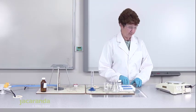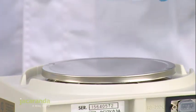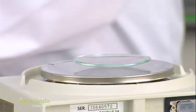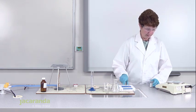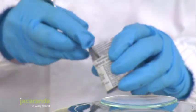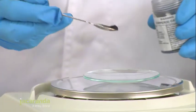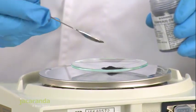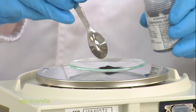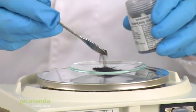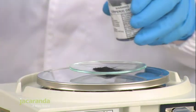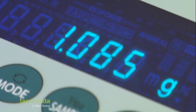First thing we're going to do is weigh out some copper oxide. We need one gram of copper oxide. So we need to use our spatula to remove the copper oxide. I'm just adding a small amount to start with. We now have a mass of 1.085 grams of copper oxide.